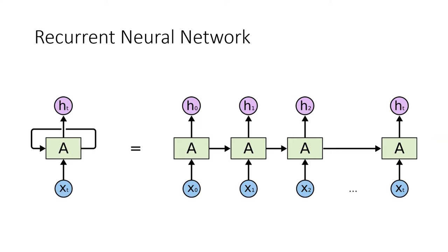Before jumping into the graphs, let me discuss a few more things. First, what is a recurrent neural network? A recurrent neural network is a special type of artificial neural network — not just with input, but also with a feedback loop. This feedback introduces a concept of memory that helps store the states or information of previous inputs to generate the next output in the sequence.